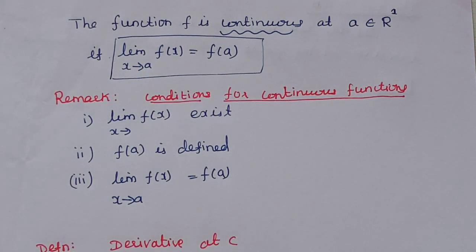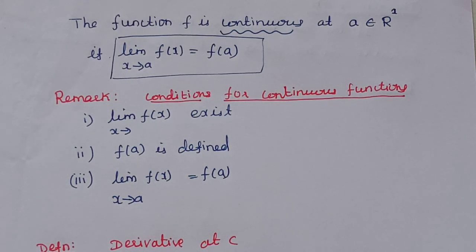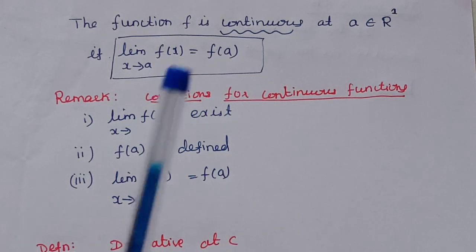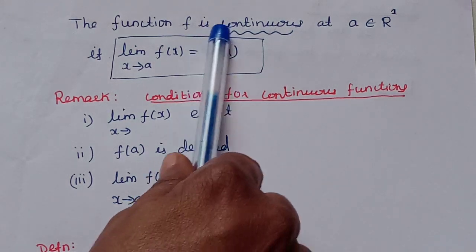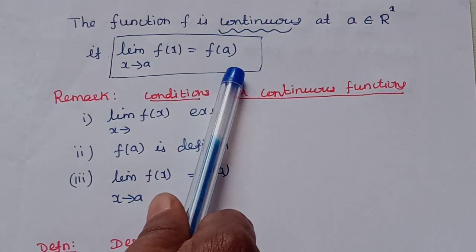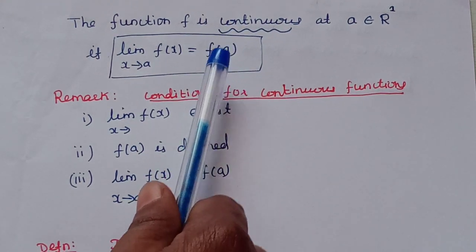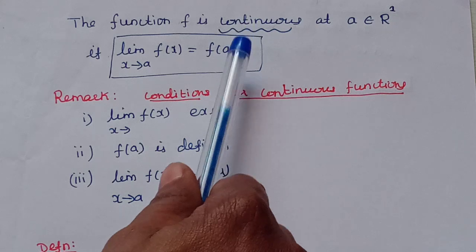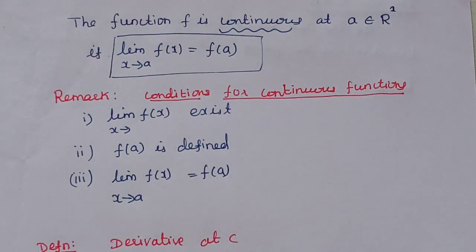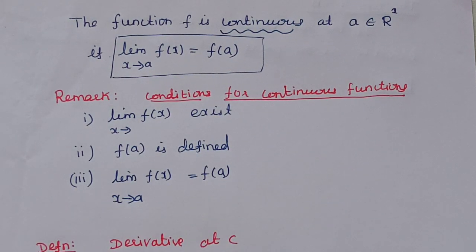The limit exists and it should be some finite value — if the limiting value is infinity, that is not defined. The right-hand side is f(a), the function value at the point a. So the limit must exist and equal the function value at a.